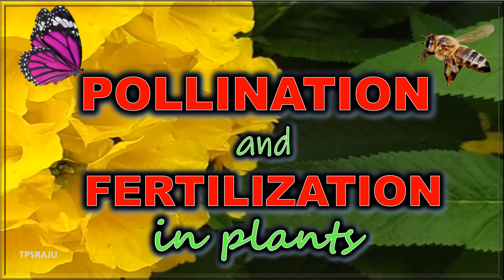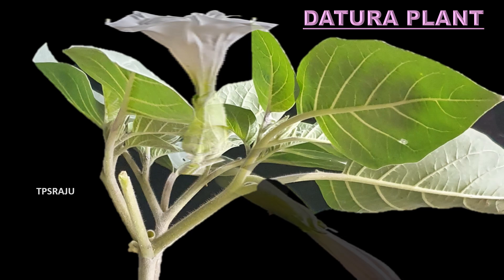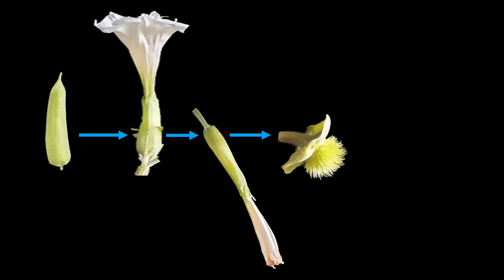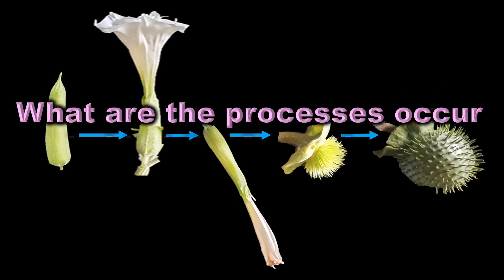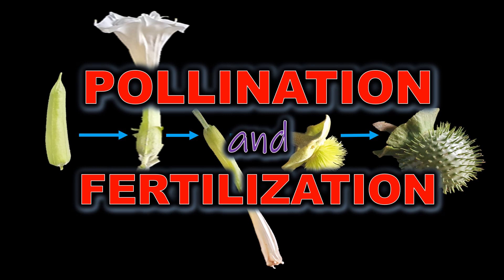Good morning. Today we are going to learn about pollination and fertilization in plants. Observe carefully what is happening here — in a tatura plant, a flower is converted into a fruit. What are the processes that occur behind the formation of fruits from flowers? Pollination and fertilization. These processes occur not only in tatura plants but also in all flowering plants.